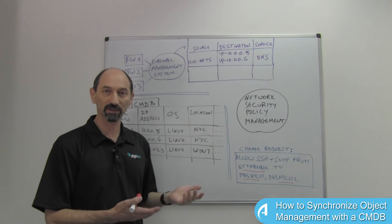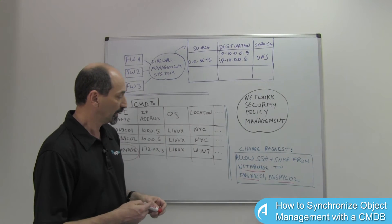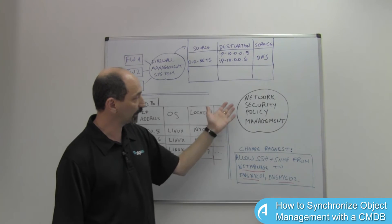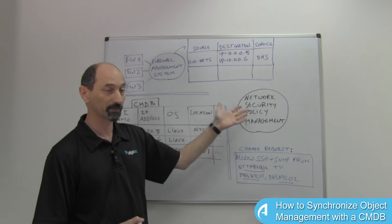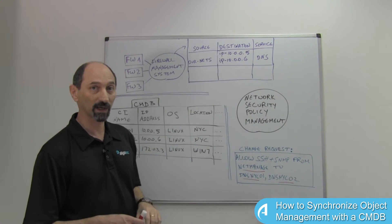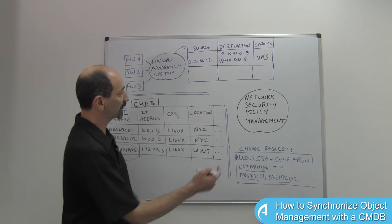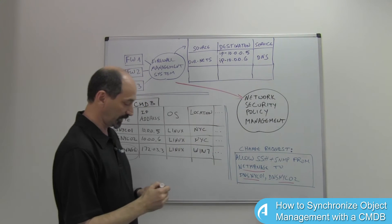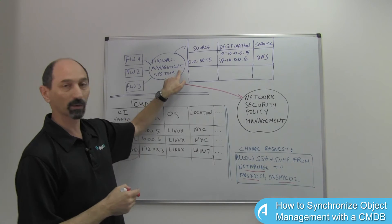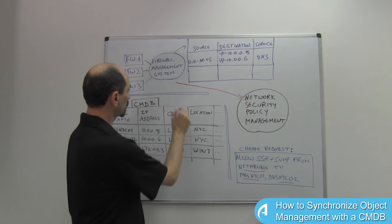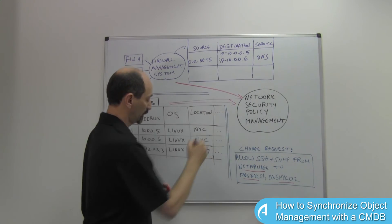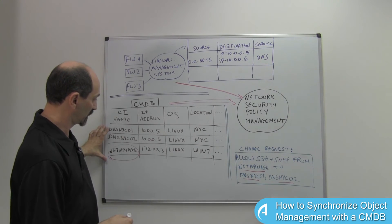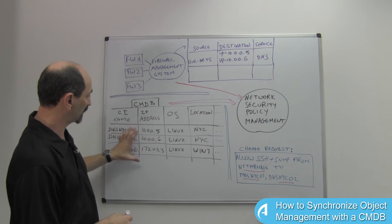This can of course be done, but it's slow and error-prone. It would be much better if we had a network security policy management system coordinating and synchronizing all of this — one that could observe the object names maintained in the firewall management system and also import information from the CMDB, getting the mapping between CMDB CI names and their IP addresses.